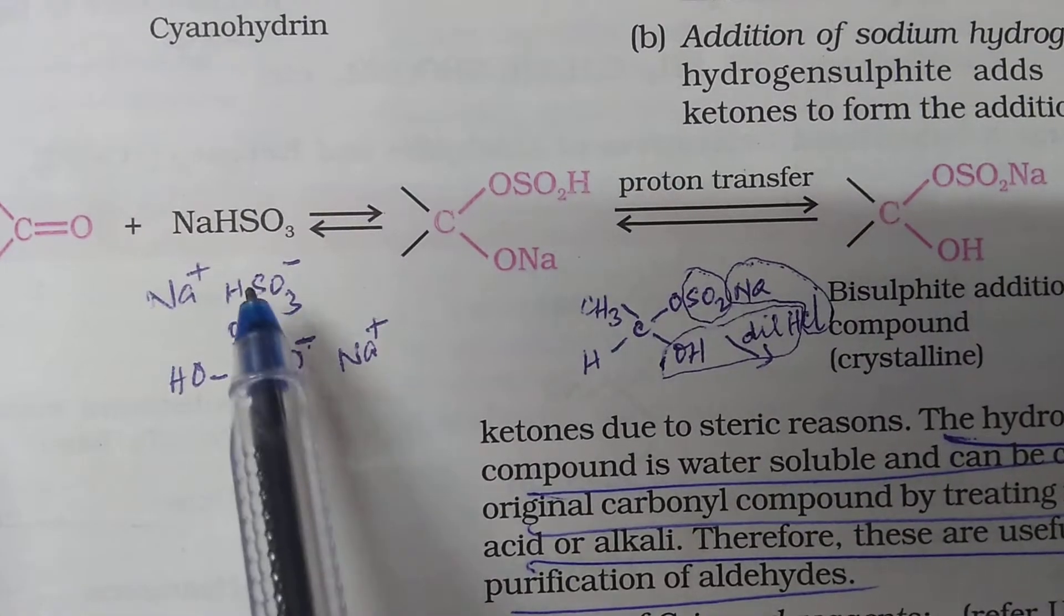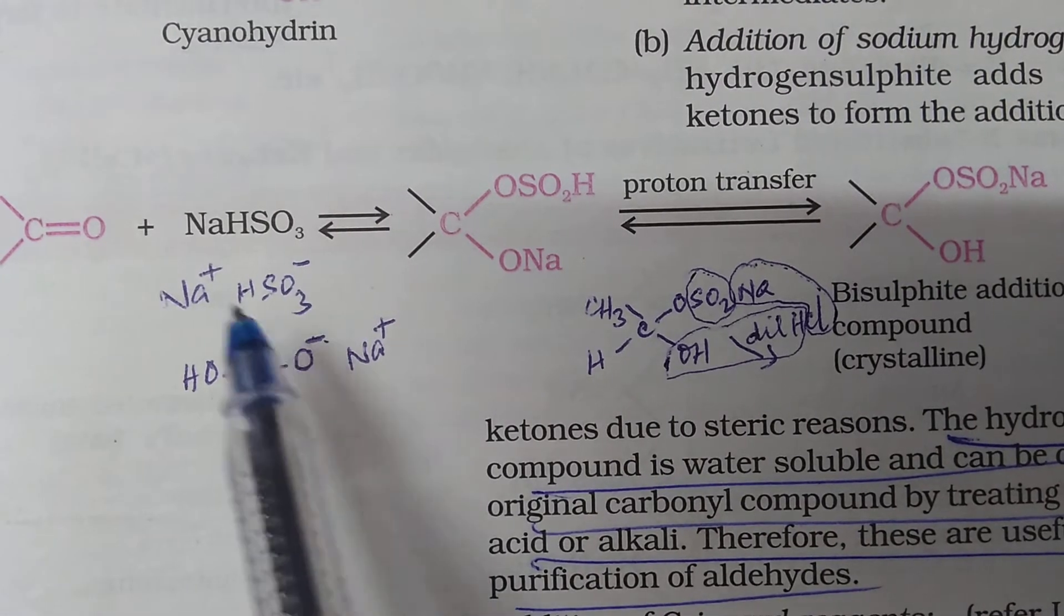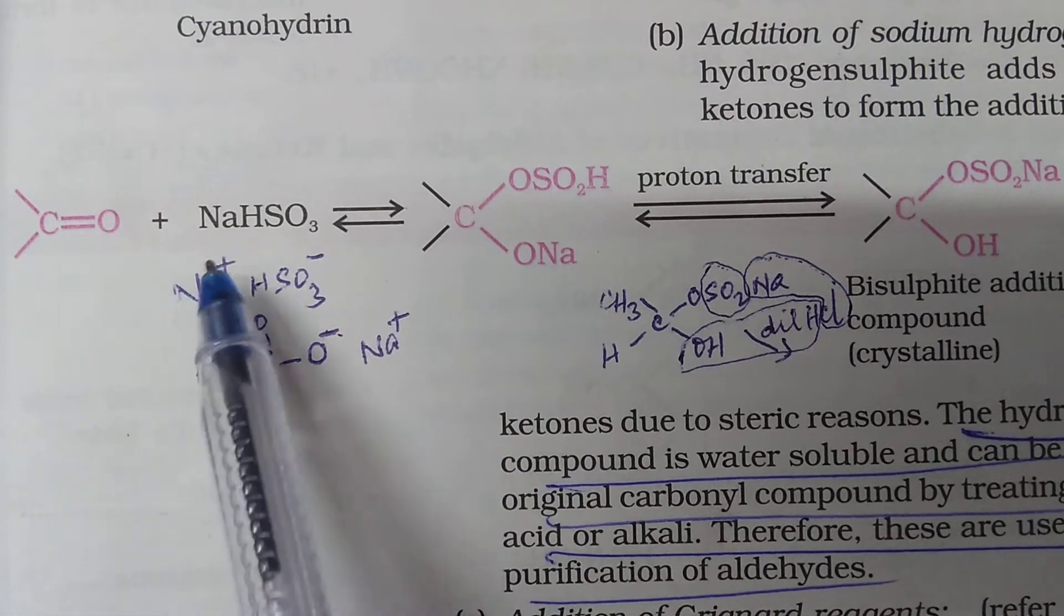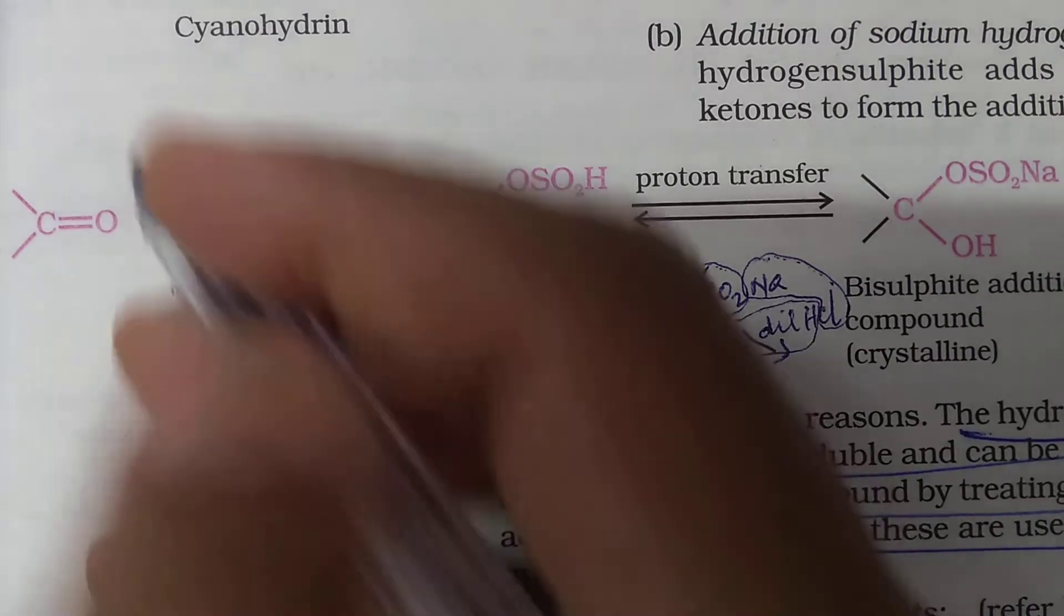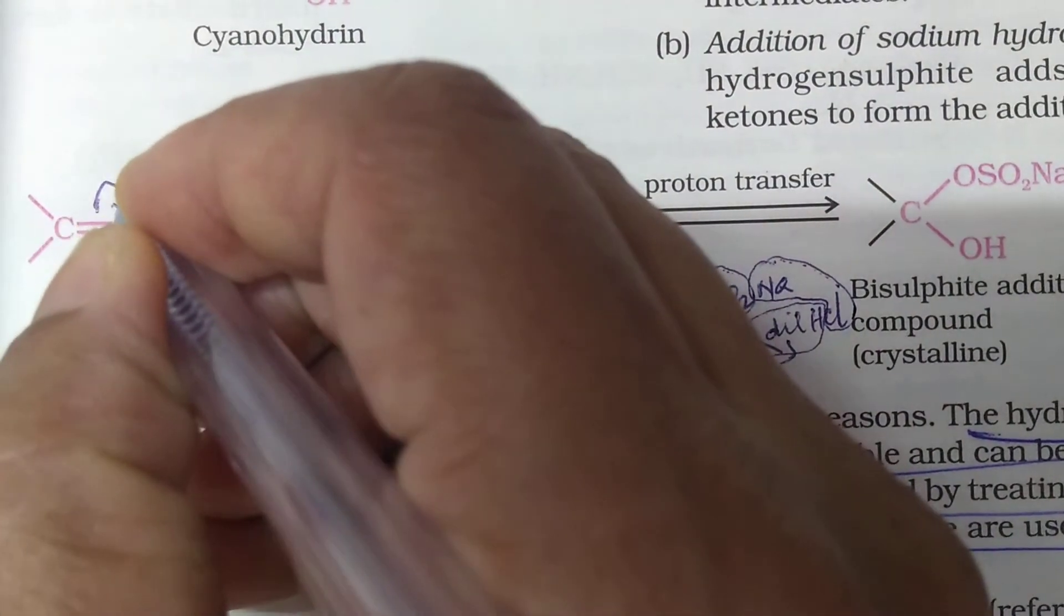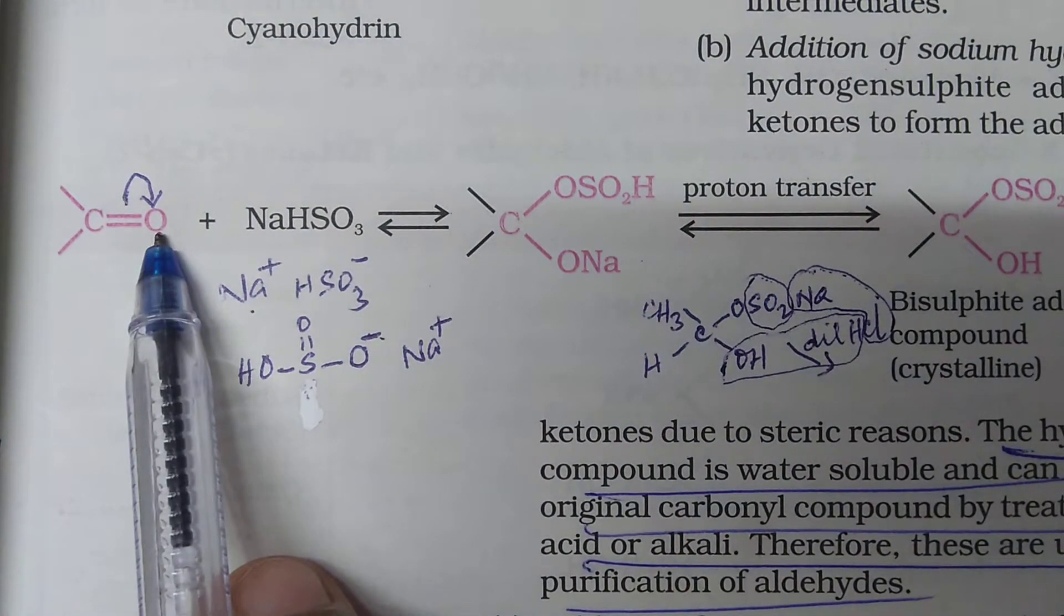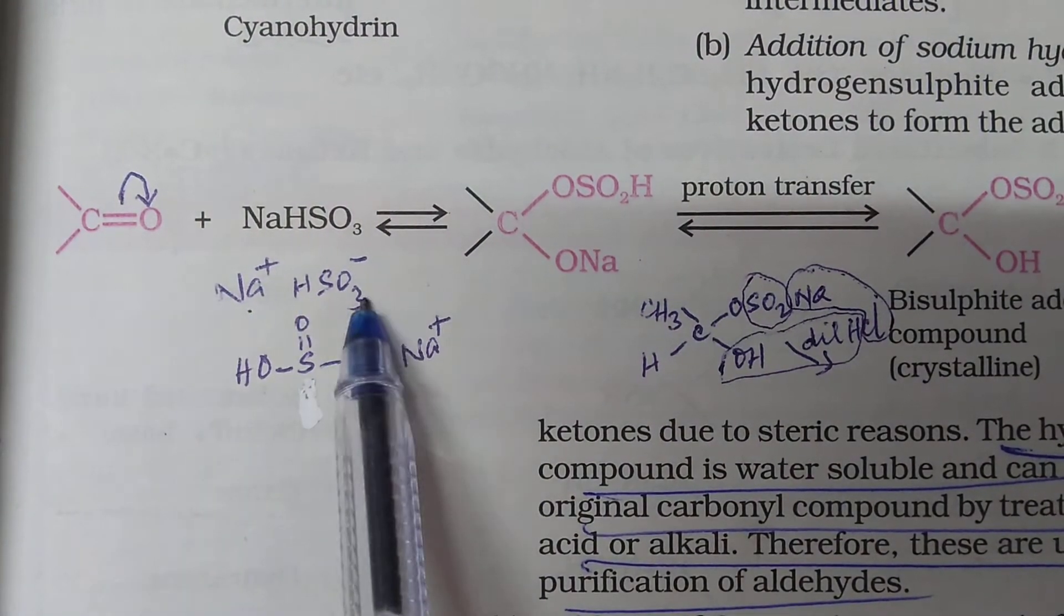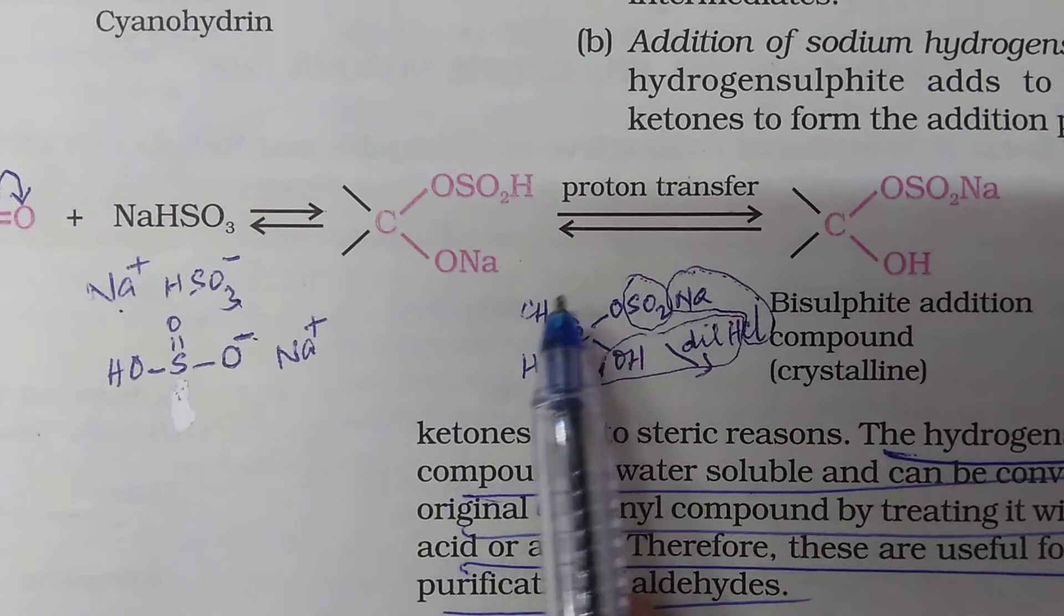When this is getting added, this is the nucleophile. HSO3 minus is the nucleophile. That will get attached to carbon and this Na plus will get attached to O negative because there is a shift of electron pair. So, this will become C plus and O minus. C plus will attract the negative charge and O minus will attract the positive charge. So, you will get this.